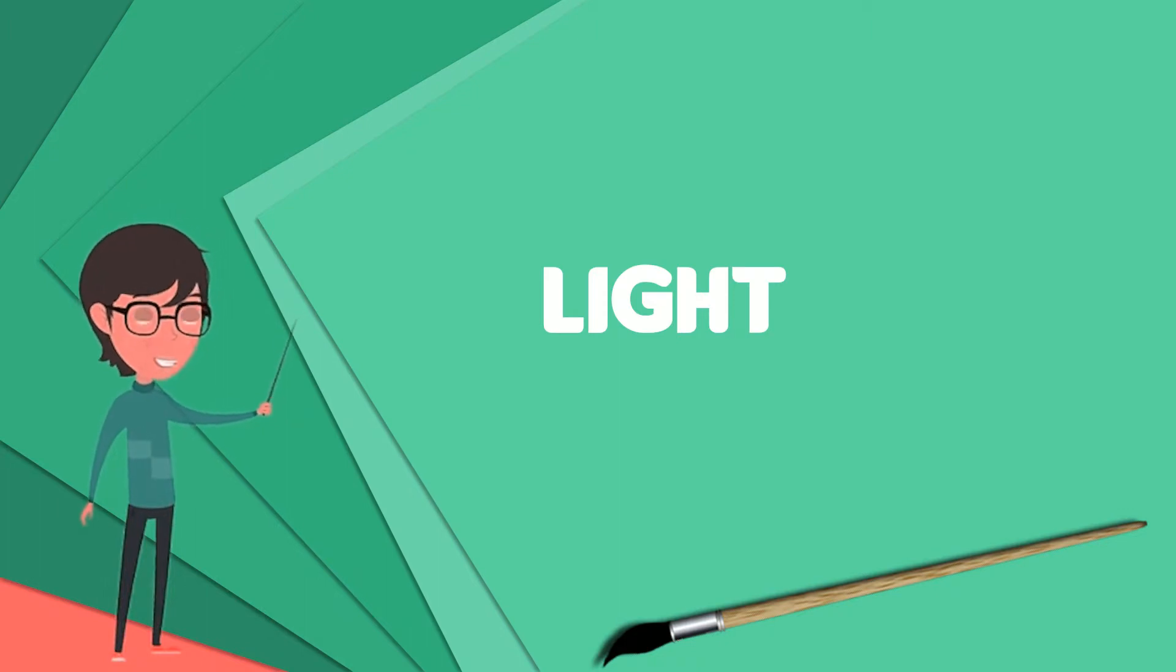Historically, another important source of light for humans has been fire, from ancient campfires to modern kerosene lamps. With the development of electric lights and power systems, electric lighting has effectively replaced firelight.